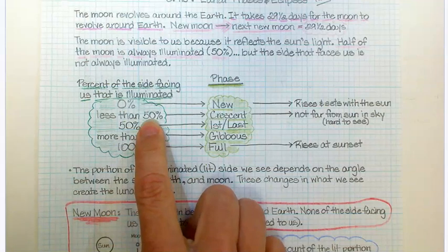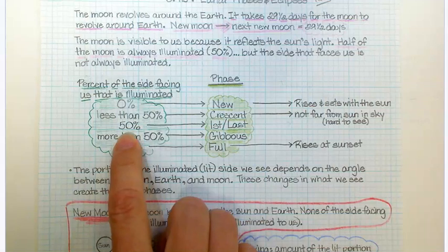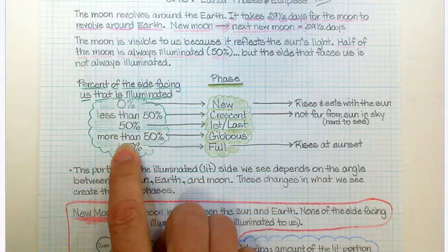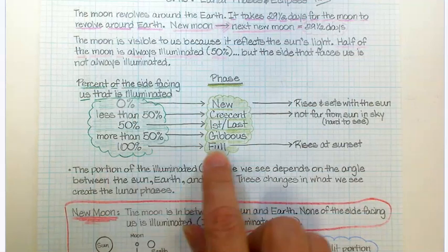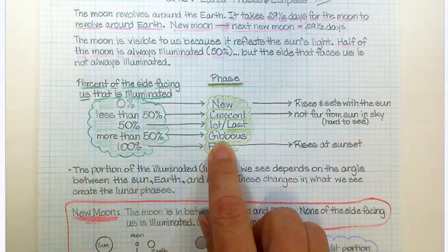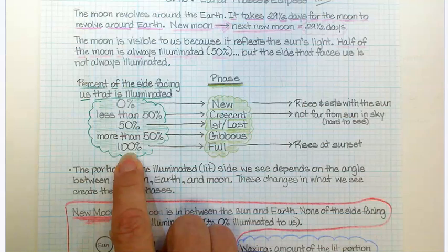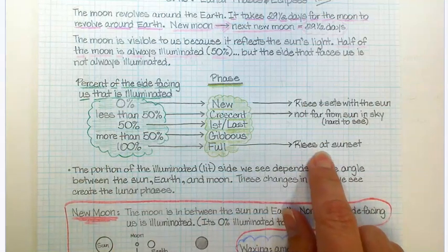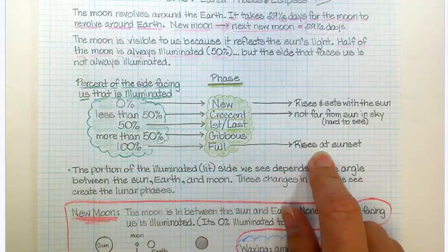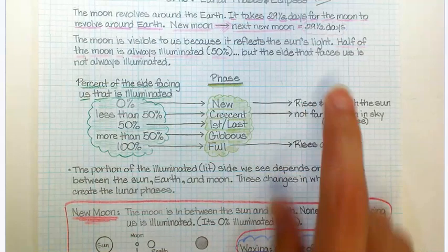Anything that's less than 50% illuminated when we look at it is a crescent. If it's exactly 50%, it's either a first or last quarter. If the side that we're looking at is more than 50% illuminated, then it's a gibbous. And then if the side facing us is 100% illuminated, then that's a full moon. Full moons rise at sunset. New moons rise and set with the sun.